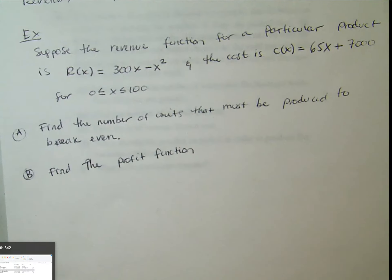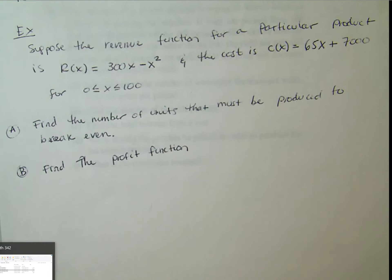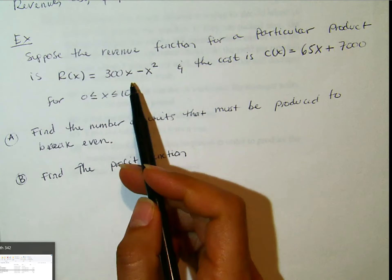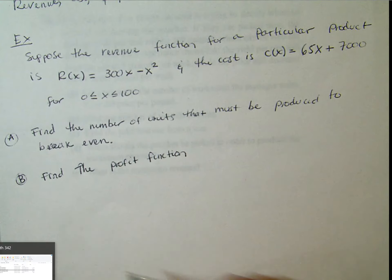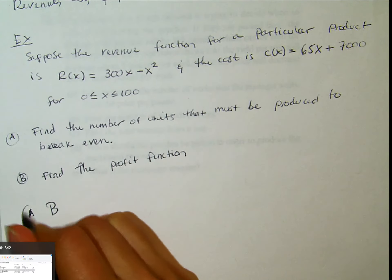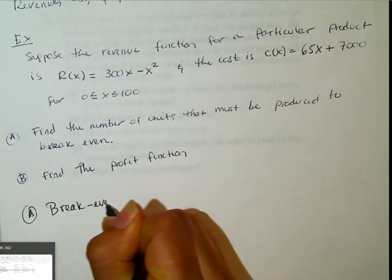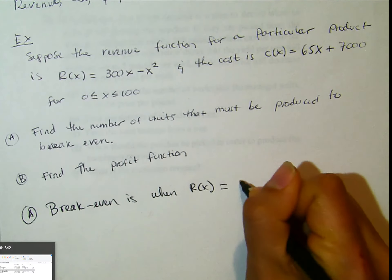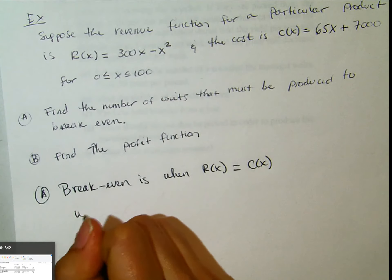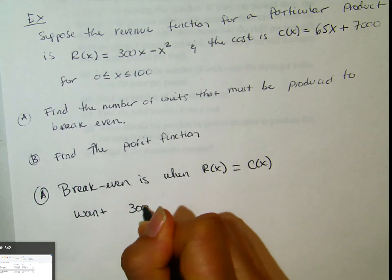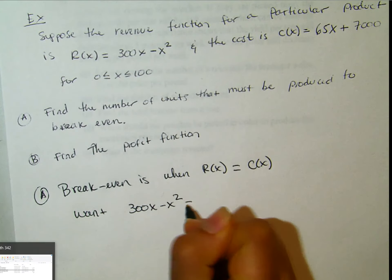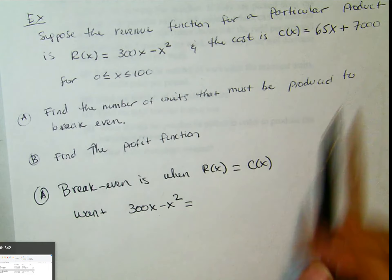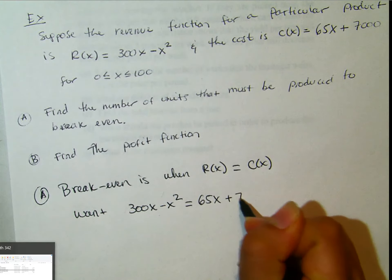Part A says: find the number of units that must be produced to break even. The break-even point is where the revenue and the cost function meet. Break even is when the revenue function equals the cost function. So we want R(x) — which is 300x minus x squared — to equal the cost function, 65x plus 7,000.